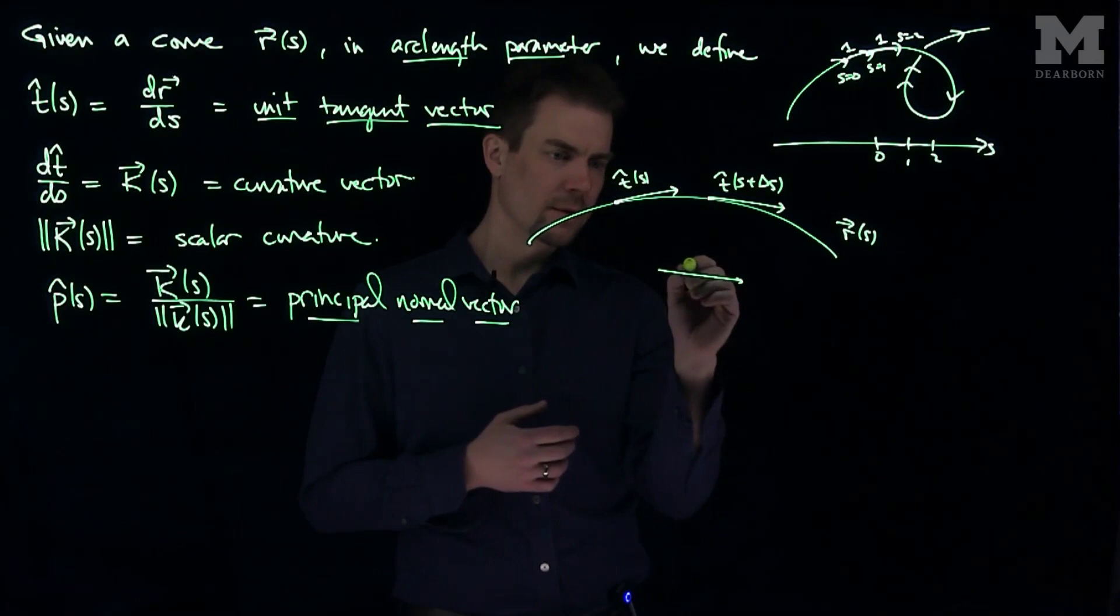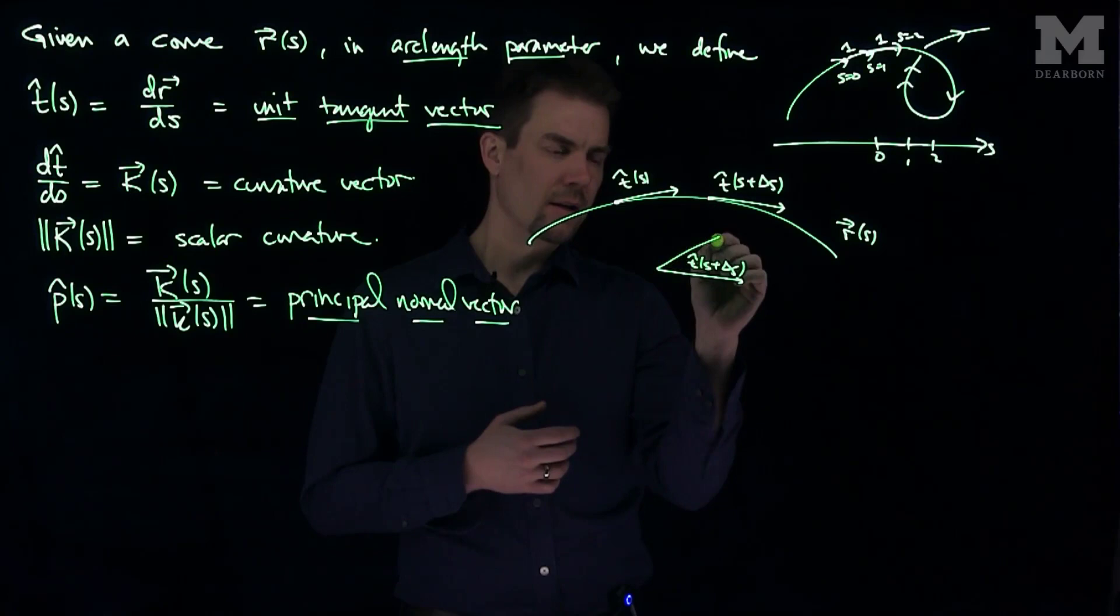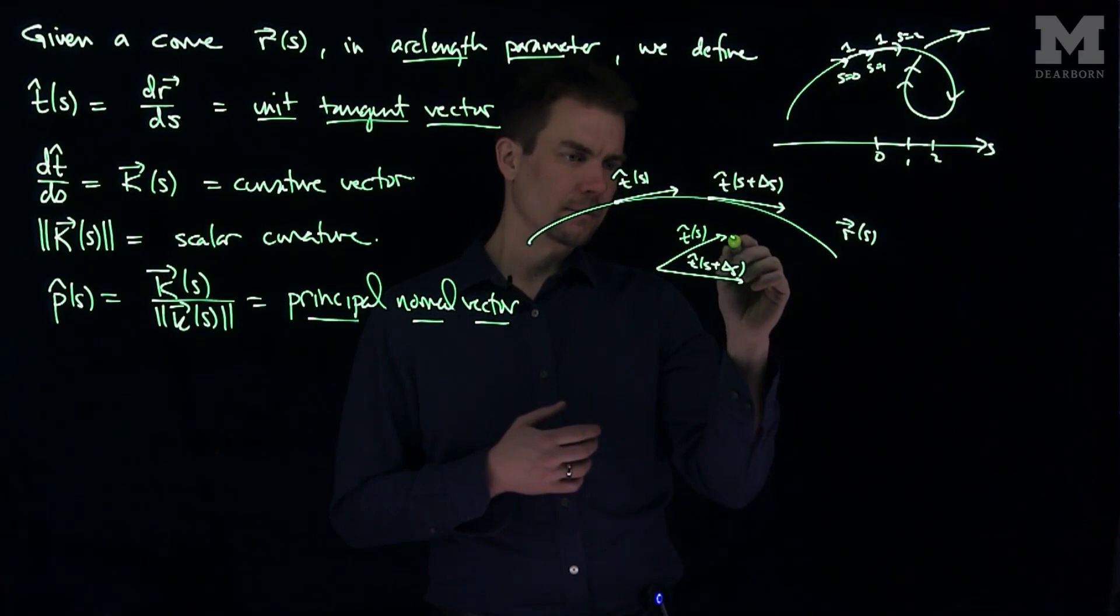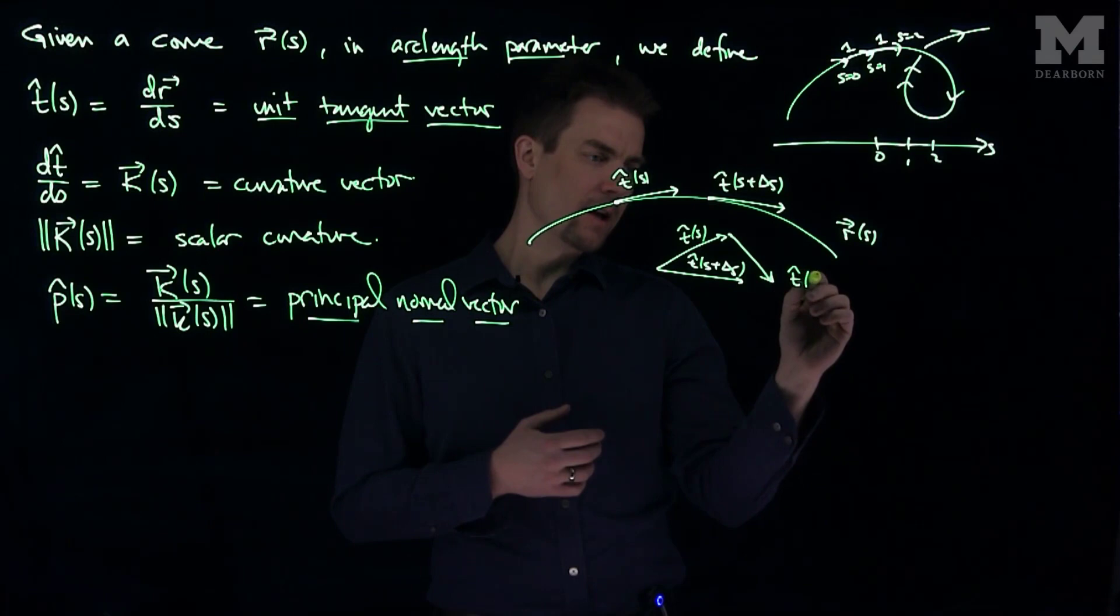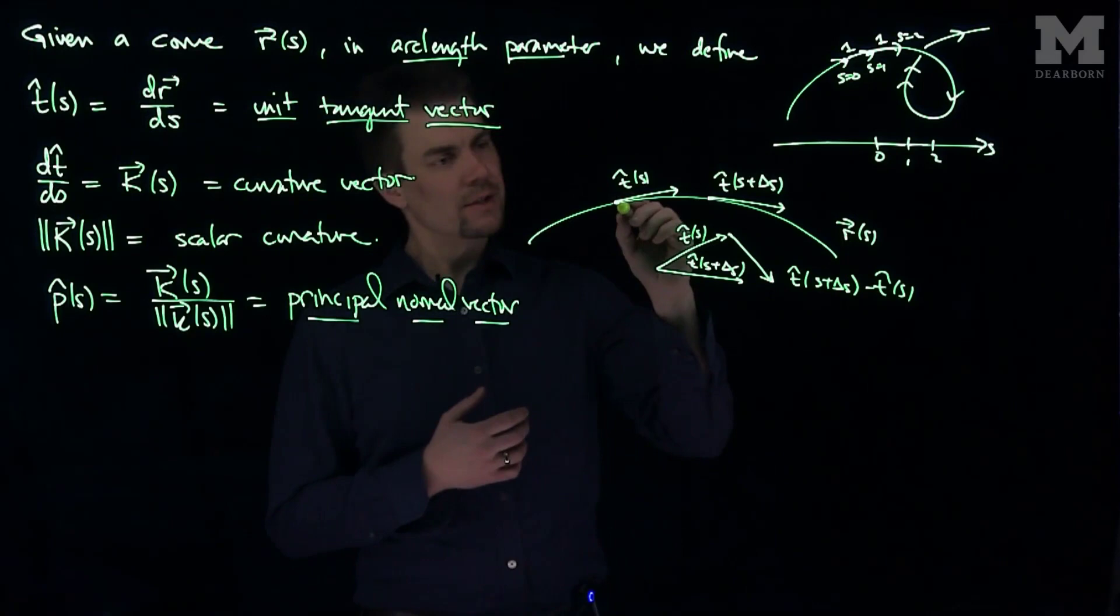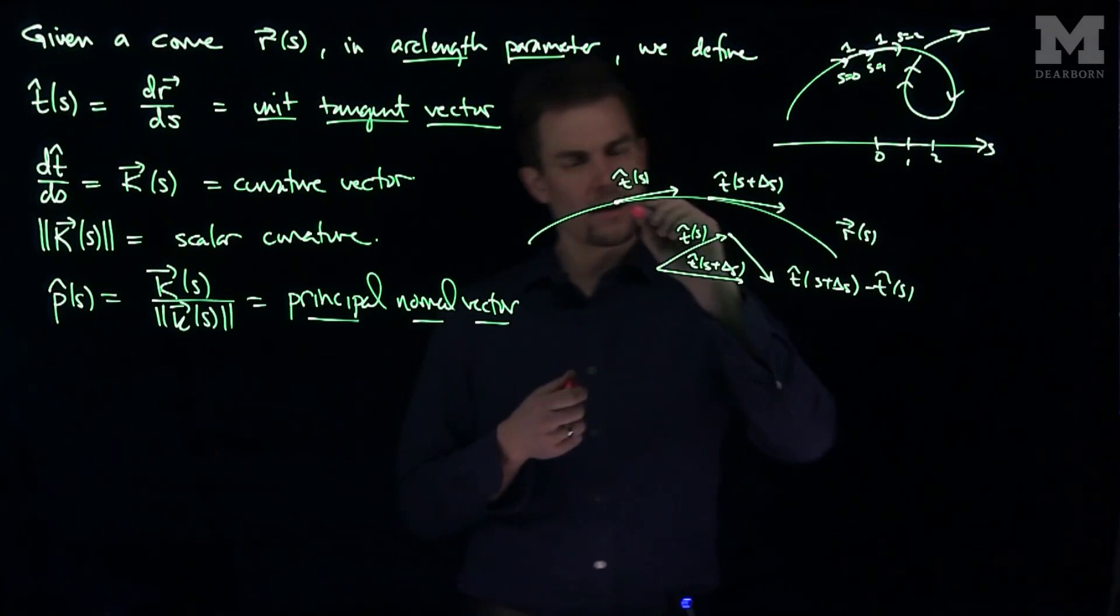It looks something like this. This is t hat of s plus delta s, and here is my t hat of s. And so this vector over here would have to be, going from this tip to that tail, would be t hat of s plus delta s minus t hat of s. So this vector over here, the difference of these two vectors, will point inward to the curve.